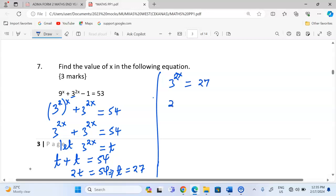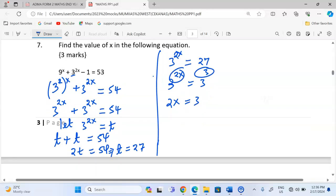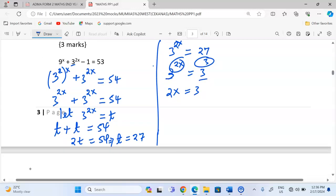You can look and see that 27 can be expressed to the base of 3, which makes it 3 power 3. So we can simplify by letting the powers be equal since the base is the same. Therefore, 2x is equivalent to 3, because the bases are both 3.